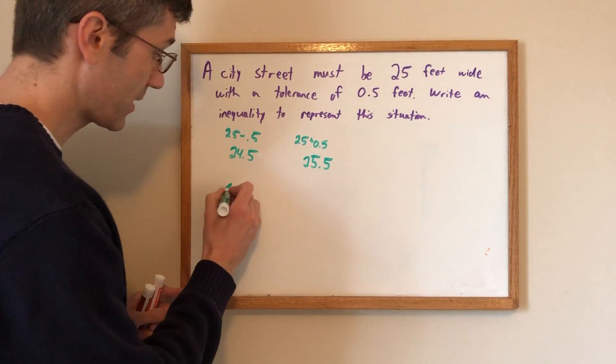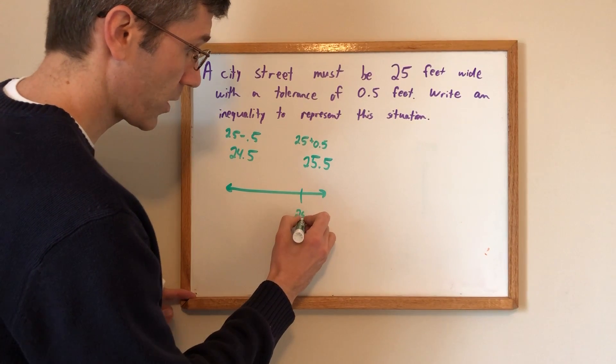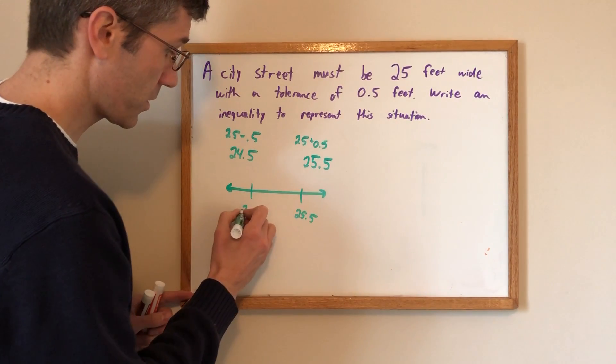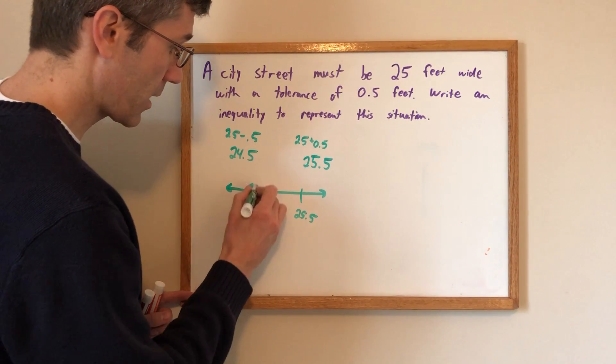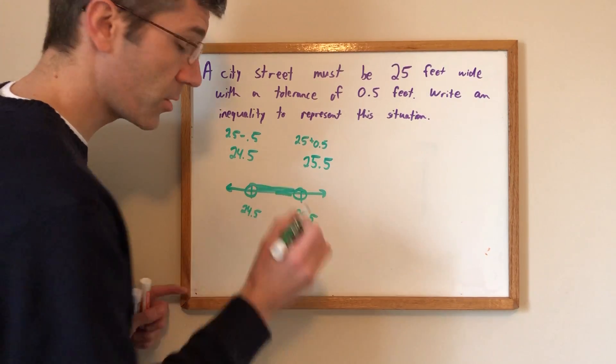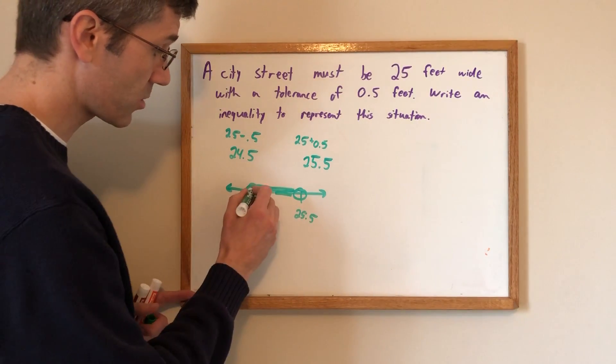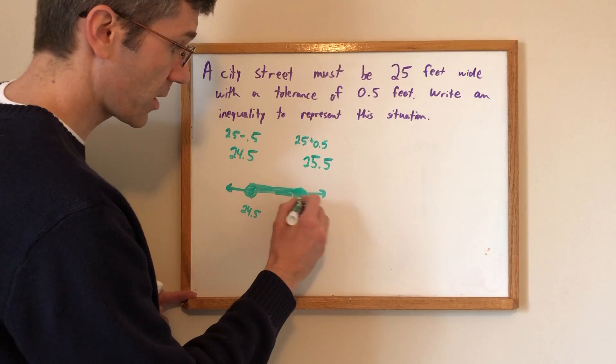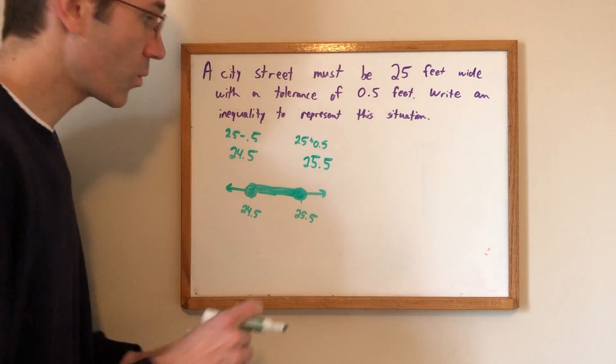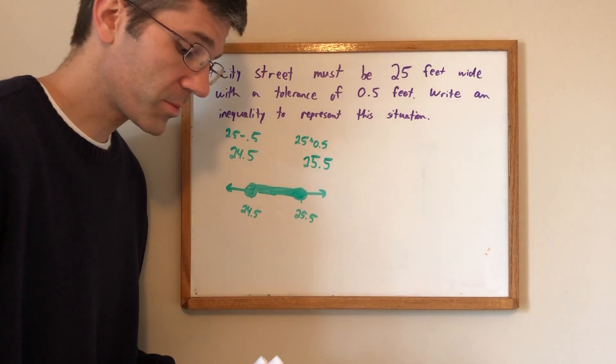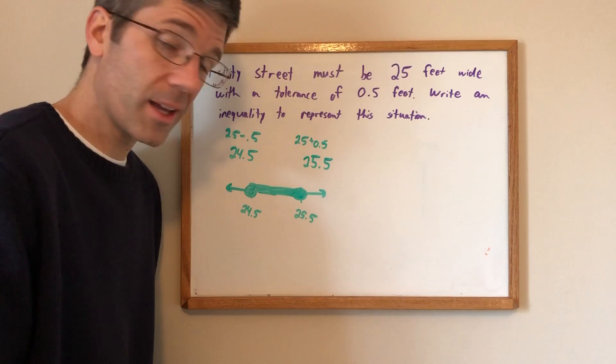So graphically it looks like this. This would be 25 and a half. This would be 24 and a half and it would go from here to here and I will accept those exact values. I will accept 24 and a half. I will accept 25 and a half. So whatever I'm about to do in terms of setting up an actual inequality, here's what I do know.